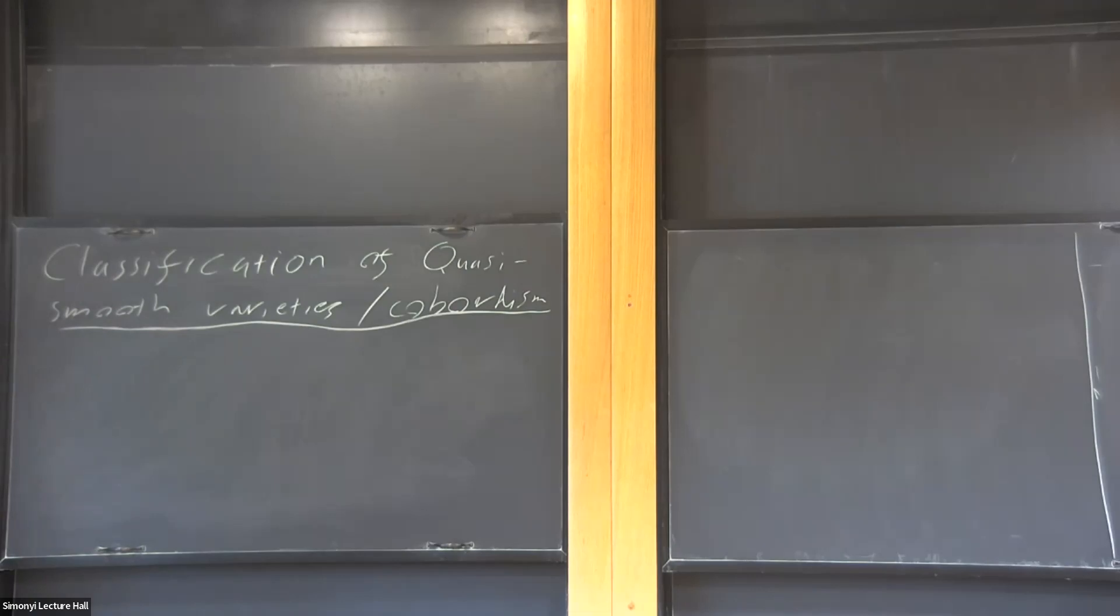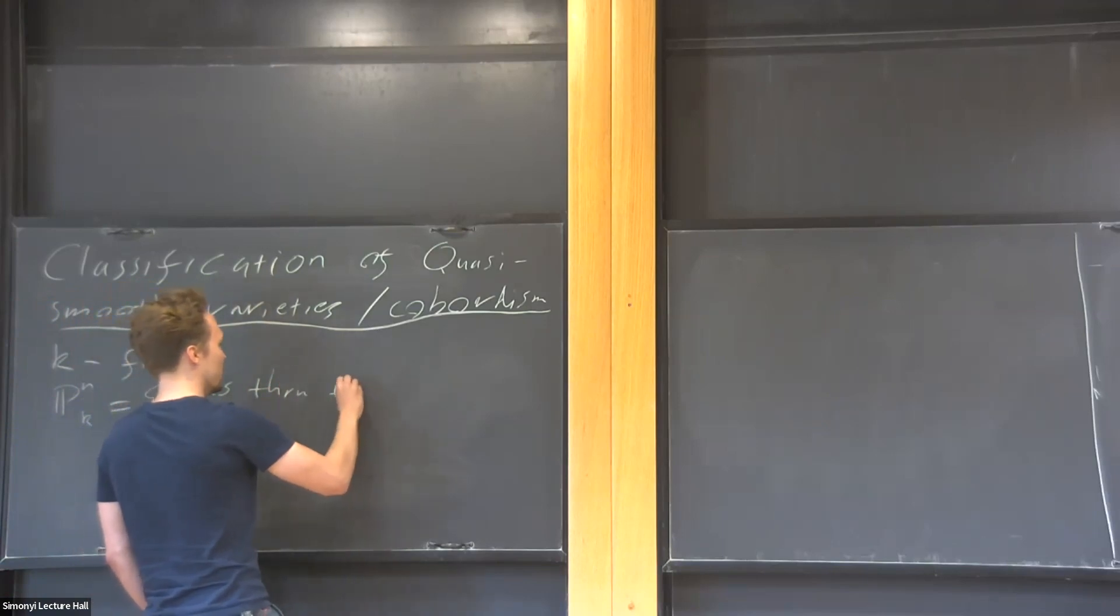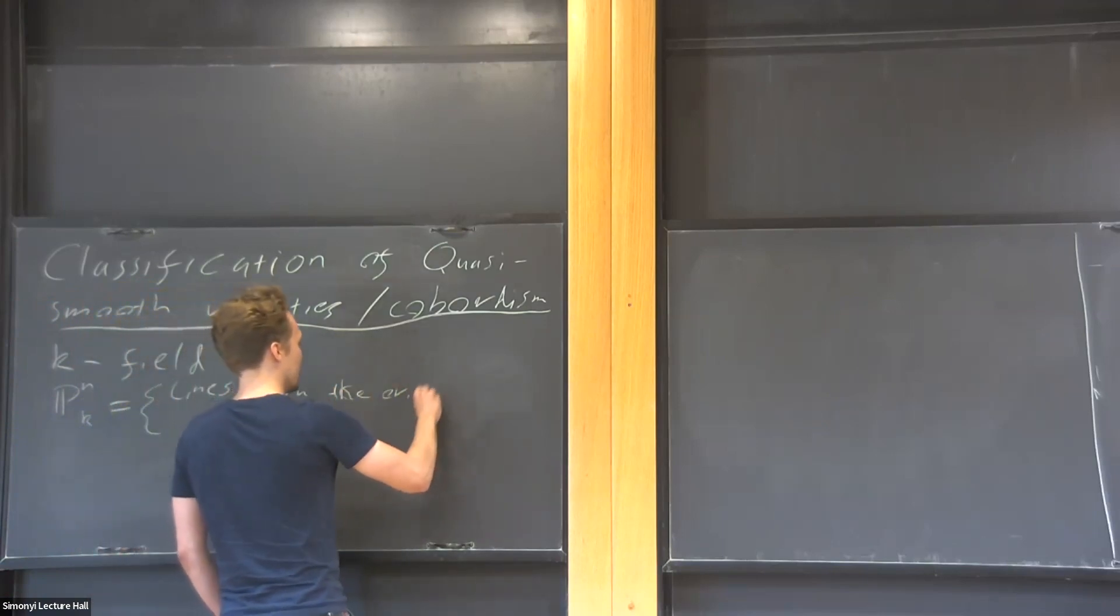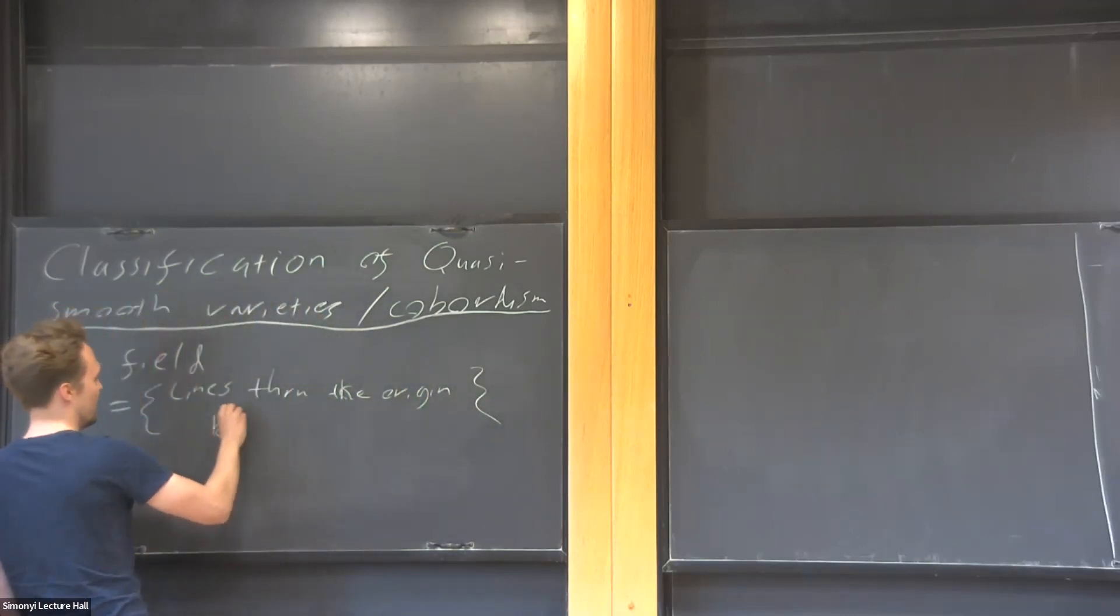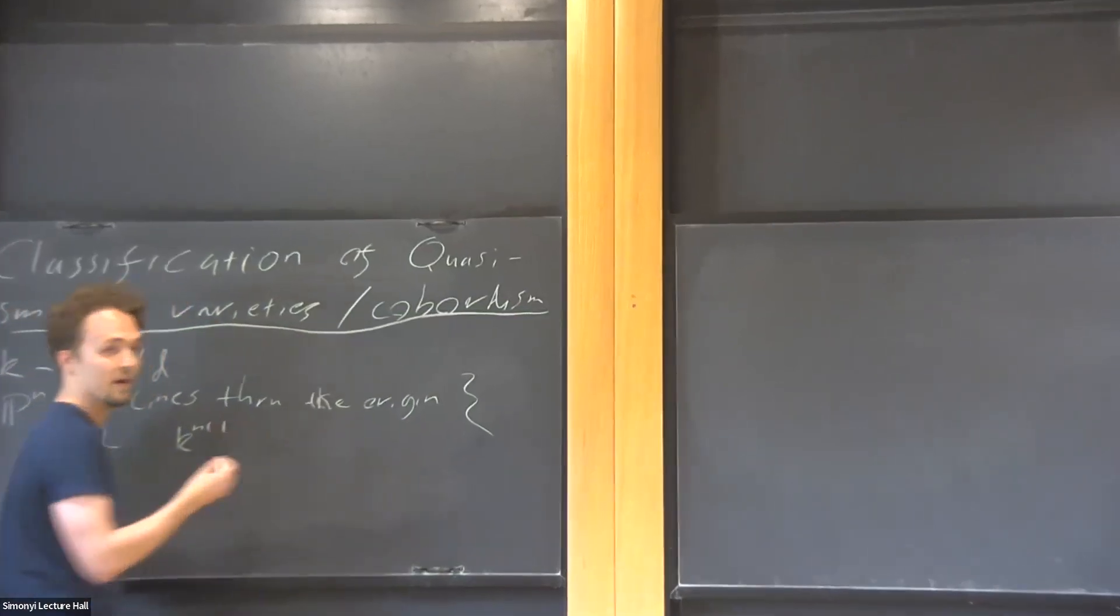This is a general audience talk, so I should introduce algebraic geometry very quickly. One of the most important geometric things today is the projective space. You can do this over every field, and this is just the space of all lines through the origin in this n plus one dimensional vector space over k.